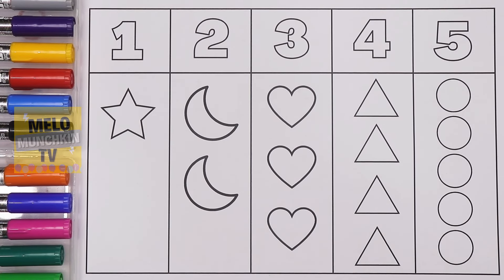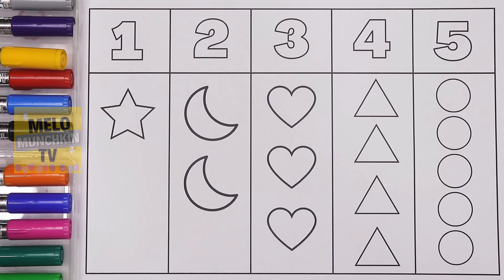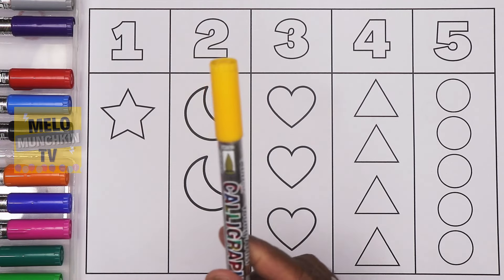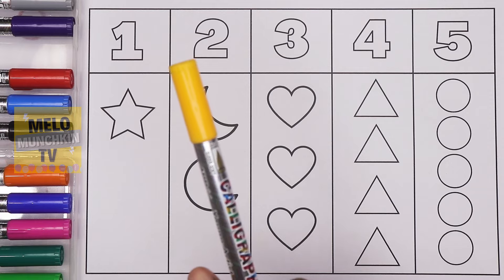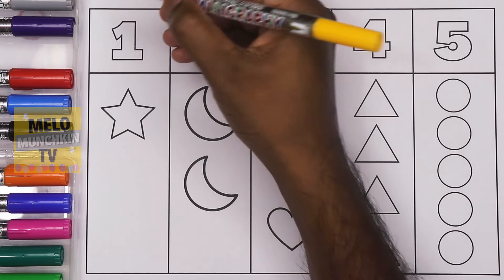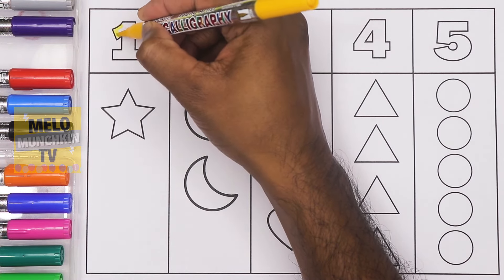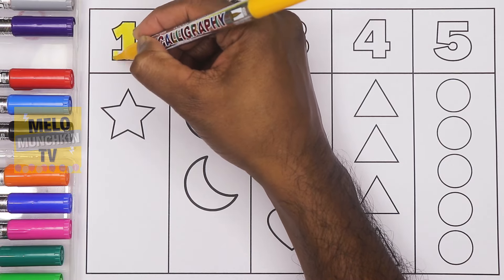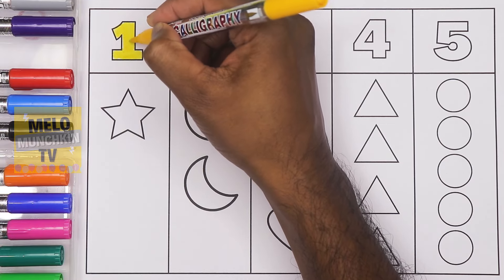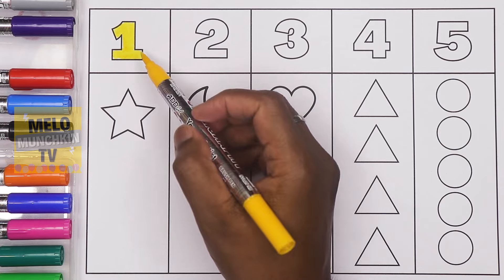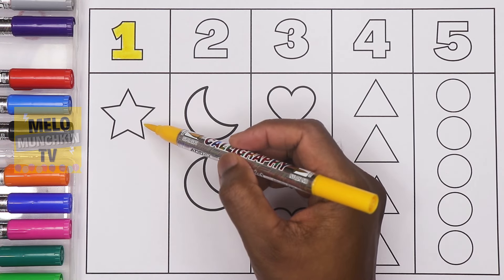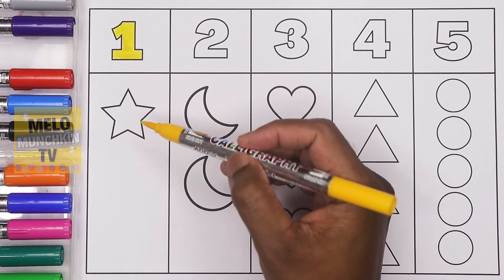Hello kids! Today in this video we'll learn counting numbers from one to five, along with colors and shapes. So let's get started. First, I'll take yellow color — this is yellow color. And color number one, this is number one. And this one is a star. How many stars are there?